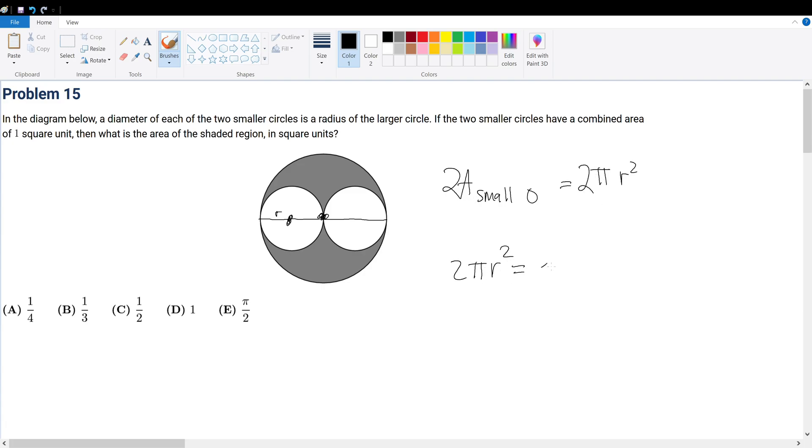Now 2πr² must equal one because that's the combined area. So what is r²? r² is 1 over 2π. So that means r must be equal to the square root of 1 over 2π.